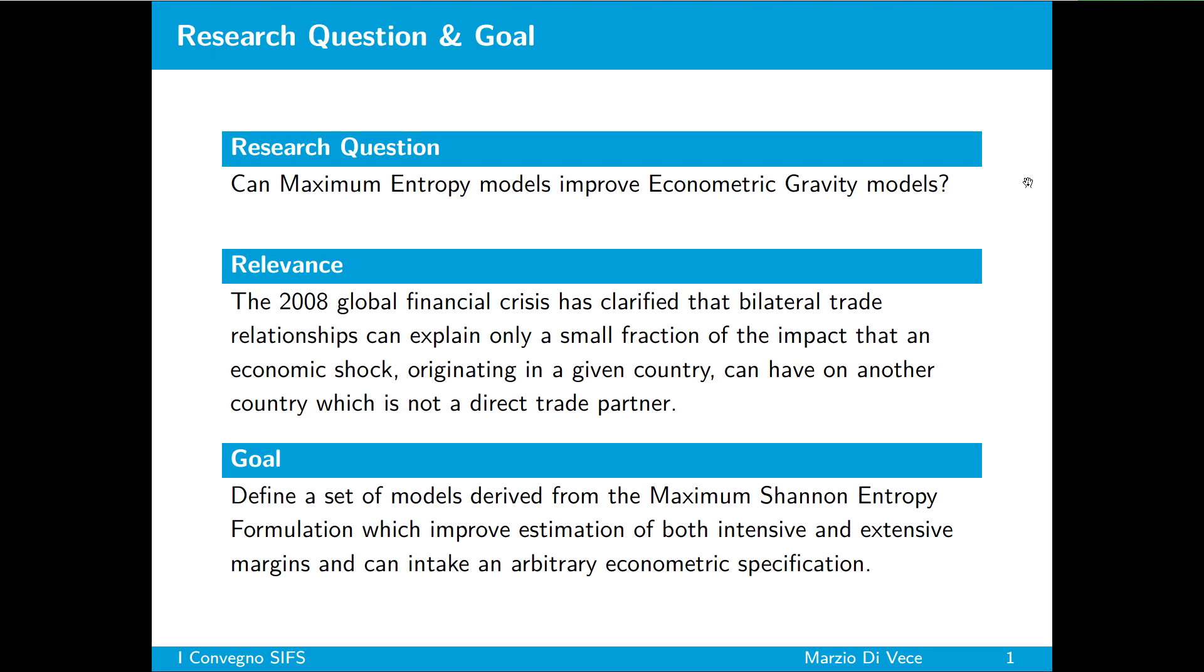The main goal of such research is that of improving econometric gravity models using maximum entropy formalism. In fact, the econometric gravity models are very good in estimating the weights of the World Trade Web, which is our network consisting of nodes as countries and trade linkages. Whereas, maximum entropy models can be useful in order to estimate both the network structure and the weights.